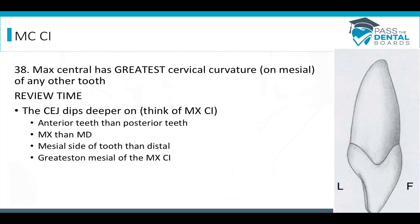The maxillary central has the greatest cervical curvature of any other tooth, and the deepest curvature is going to be on the mesial — not the distal, but the mesial.